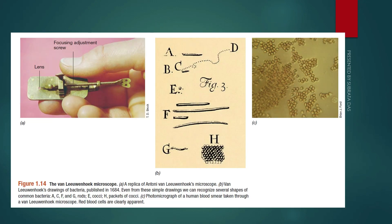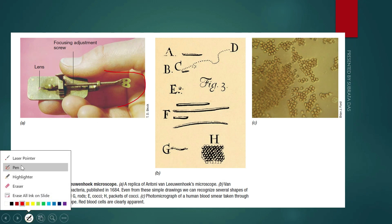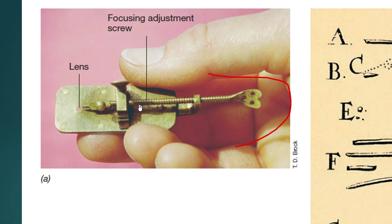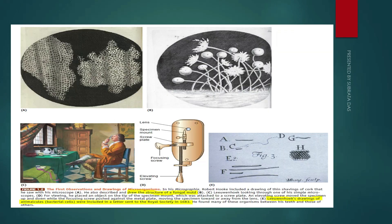This is the microscope invented by Leeuwenhoek. It is a simple microscope with a lens, and the specimen is placed at the top. A screw mechanism allows adjustment of the specimen toward the lens. By rotating this screw, he could adjust the specimen to focus it under the lens. Using this microscope, he first discovered and showed microorganisms.